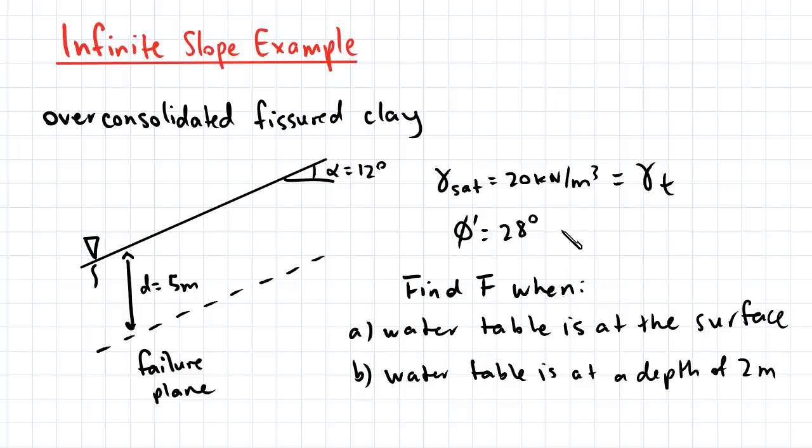The friction angle of the soil is 28 degrees, and we're interested in finding a factor of safety when: a) the water table is at the surface, and b) when the water table is at a depth of 2 meters.